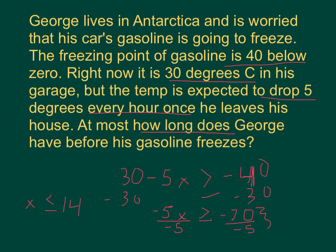And negative 70 divided by negative 5 is a positive 14. So, what this is saying now is that George has 14 or less, I suppose, 14 or less, or less than 14 or equal to, less than or equal to 14 hours before his gasoline freezes.